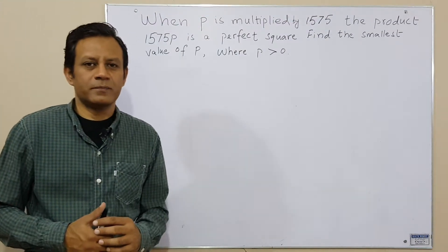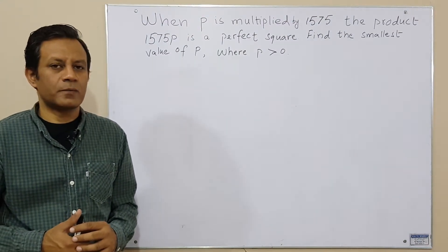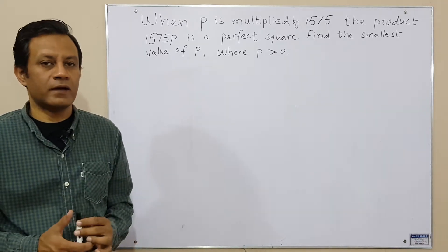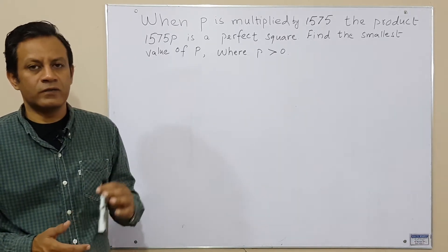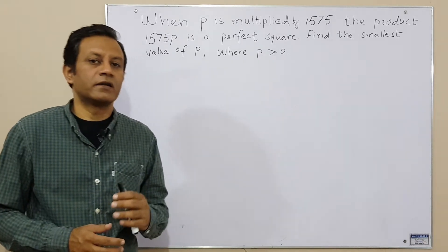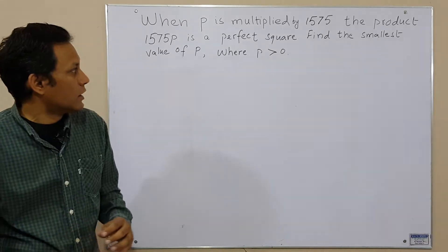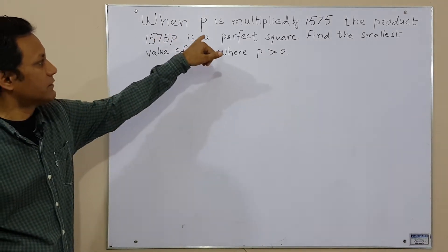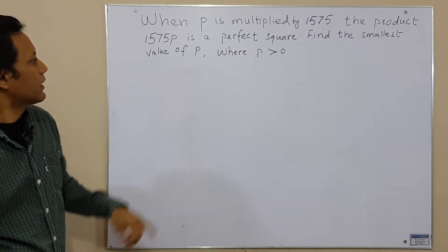Hello viewers, you're watching my channel Maths Exposure. Today we are going to learn a problem in which a number is multiplied by an unknown number p to become a perfect square, and we have to find the smallest value of p. Our problem says: when p is multiplied by 1575, the product 1575p is a perfect square — find the smallest value of p.